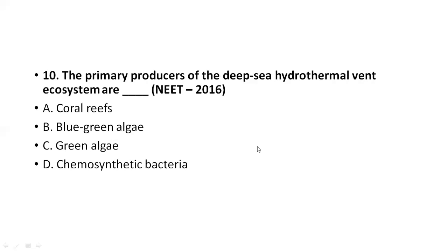The primary producers of the deep sea hydrothermal vent ecosystem — what are the primary producers there? The correct answer is chemosynthetic bacteria. Blue-green algae are found in freshwater, not in deep sea environments. Green algae are also not found there. Coral reefs are not primary producers. So chemosynthetic bacteria are the primary producers of the deep sea hydrothermal vent ecosystem.